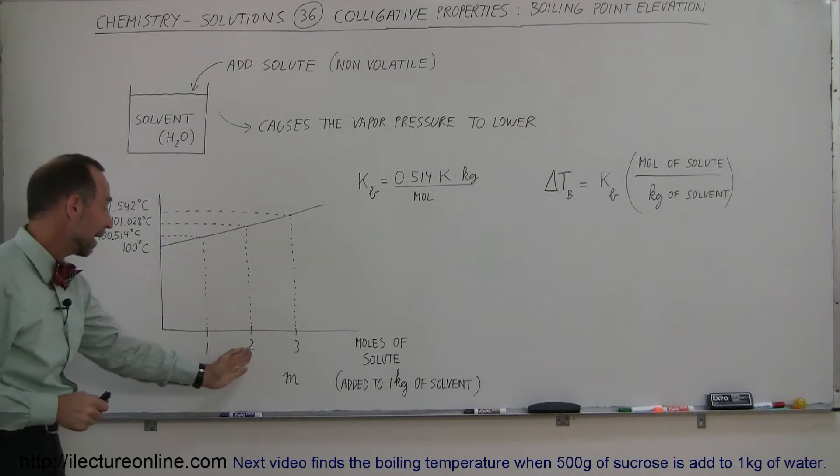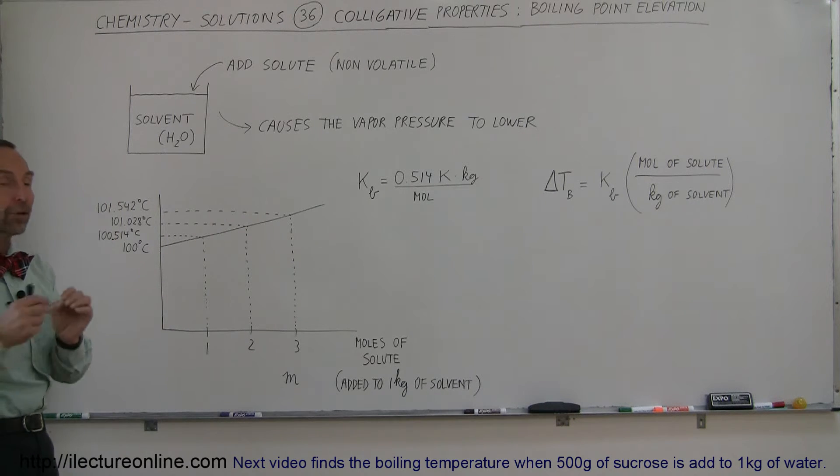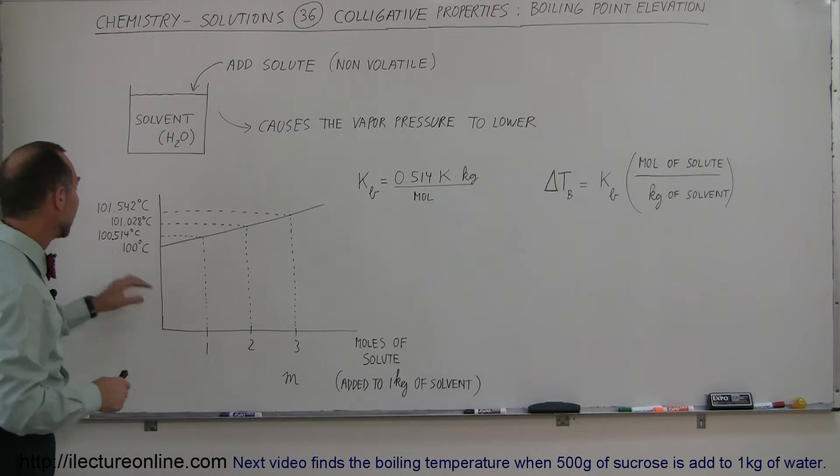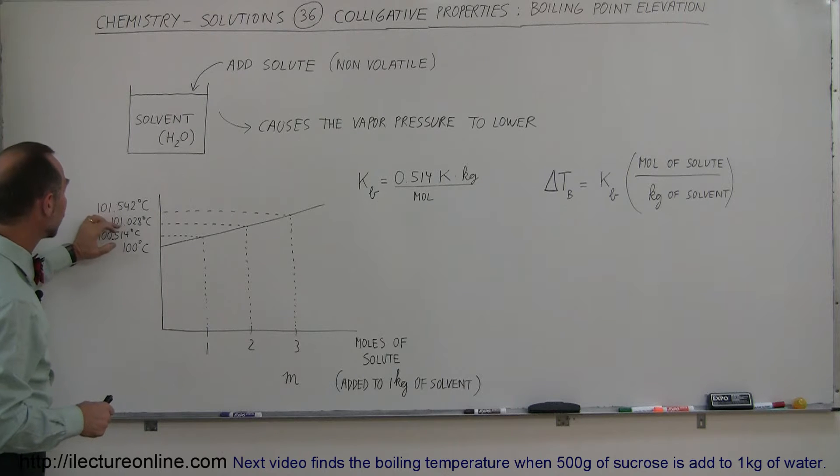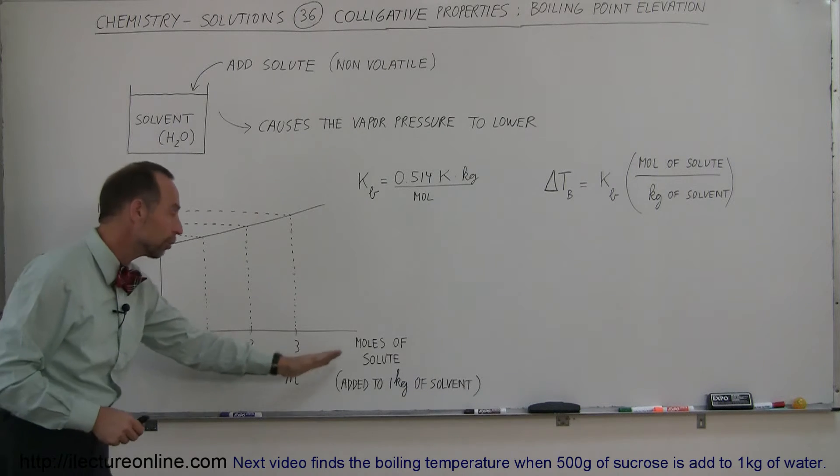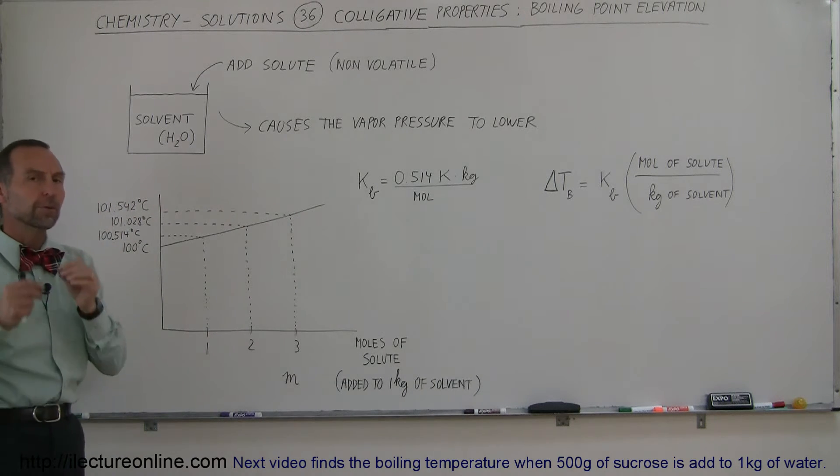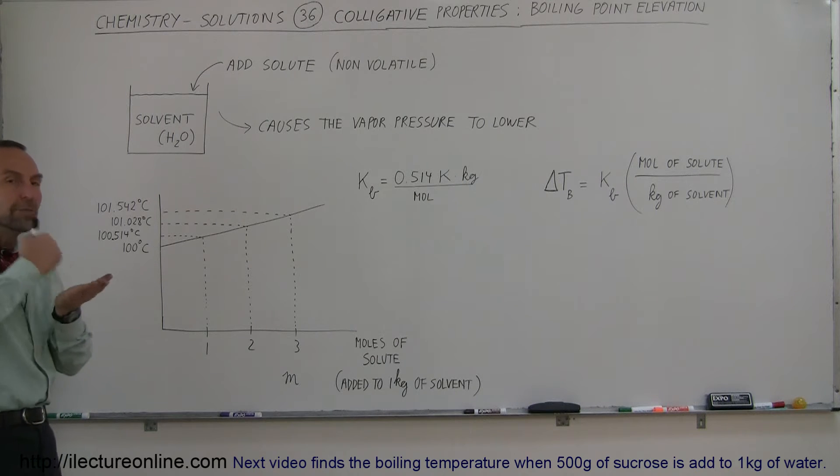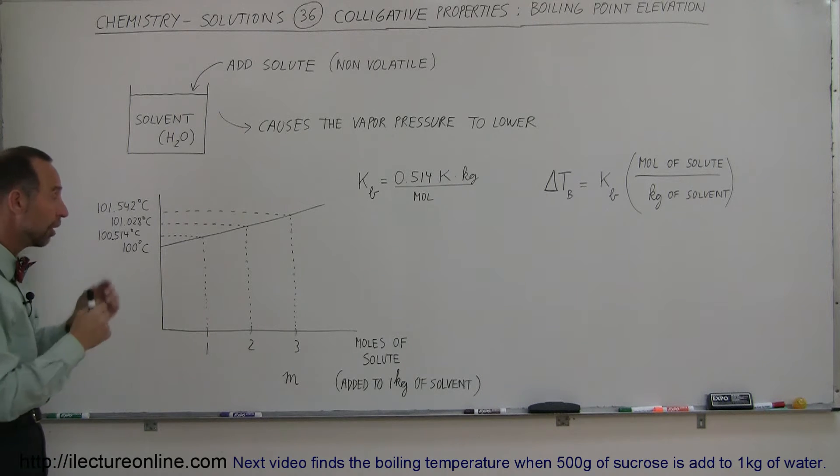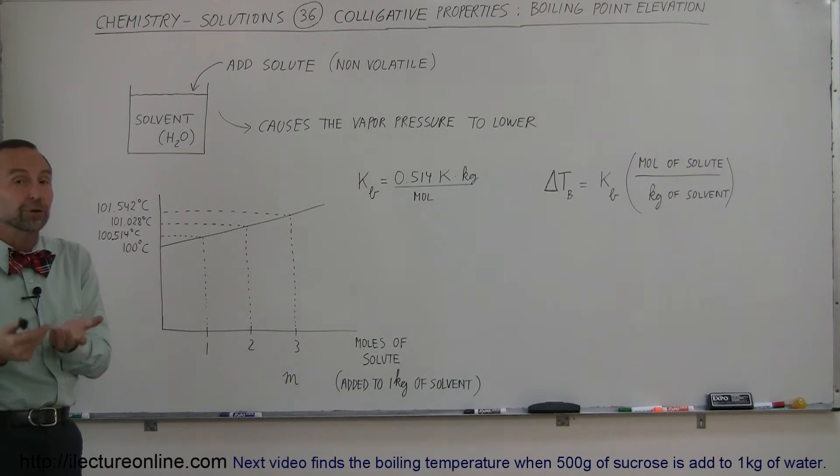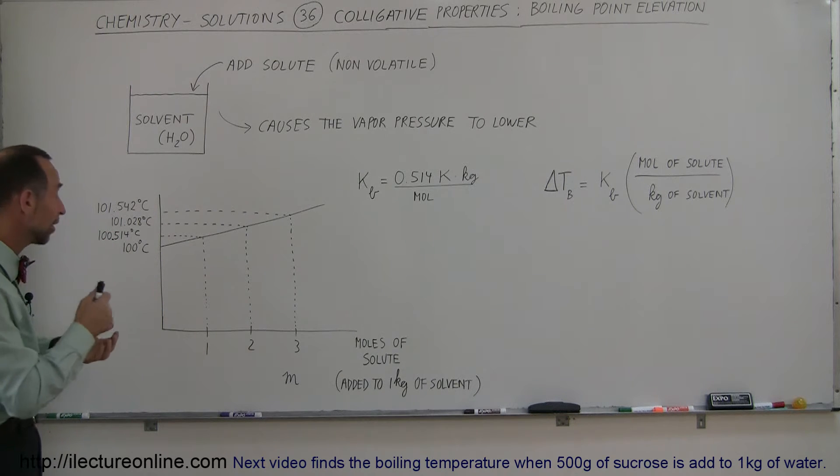If you have two moles of solute added to the solution, the boiling point has gone up to 101.028. If you add three moles of solute to one kilogram of solvent, the boiling point is 101.542 degrees centigrade. For every one mole of solute added to the solvent, the boiling temperature rises by 0.514 Kelvin or 0.514 centigrade degrees.